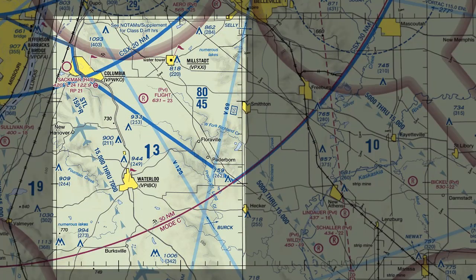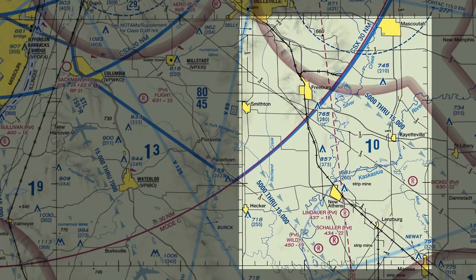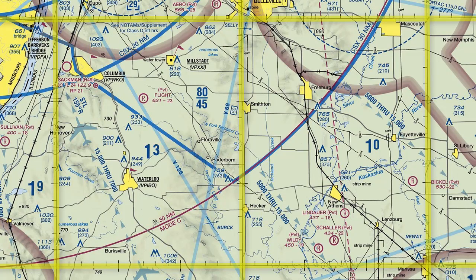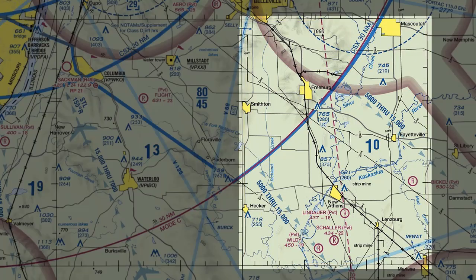Each chart is divided into rectangles known as quadrangles, which are the intersections between longitude and latitude lines. Within a quadrangle, you may see a larger black dot with a number next to it, such as this one showing a spot at 660 feet. This means this spot is the highest terrain within this quadrangle.